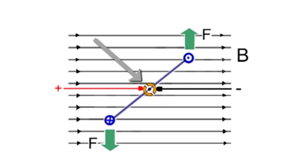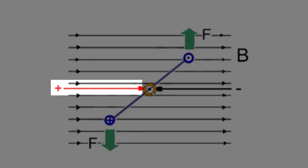The brushes, red for positive and black for negative, contact the commutator as it turns with the loop, with forces on the sides of the loop as shown by the green arrows.